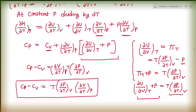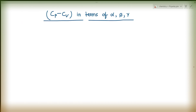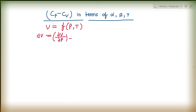This is one of the very important relationships between CP and CV. Now let us see the next type: CP minus CV in terms of alpha, beta, and gamma. We know we can write volume as a function of pressure and temperature. Since it is a perfect differential: dV equals (∂V/∂P) at constant T times dP plus (∂V/∂T) at constant P times dT.